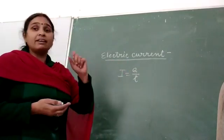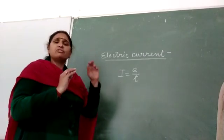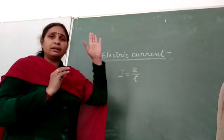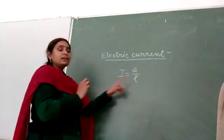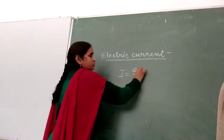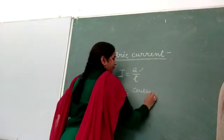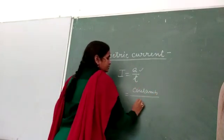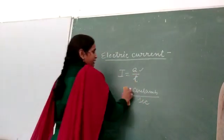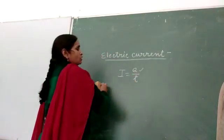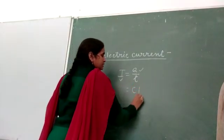Now how we can find the SI unit of electric current. The SI unit of electric current is already known as the fundamental quantity — the unit is ampere. But with the help of Q and T, the SI unit of charge is coulomb and the unit of time is second. So the SI unit of electric current will be coulomb per second.